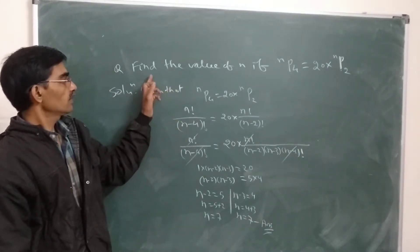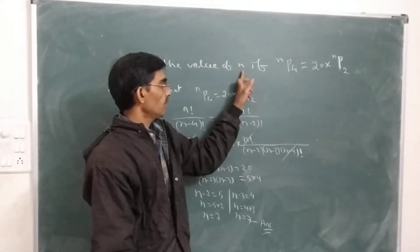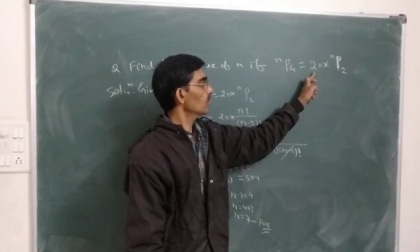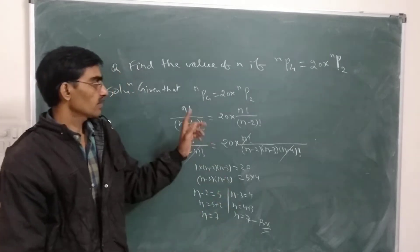Another question on permutation. Find the value of N if NP4 equals 20 times NP2.